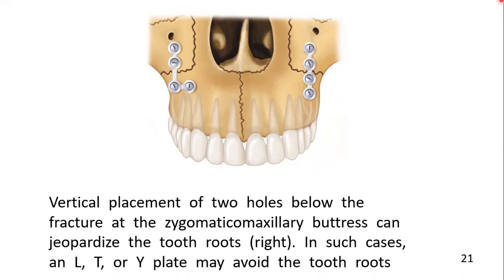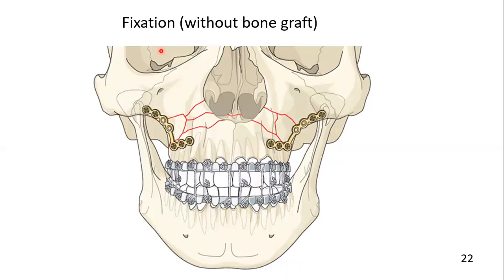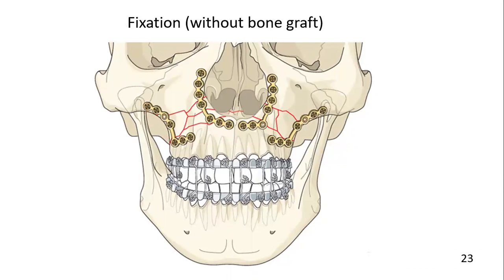Here are a few examples of how the buttress system is applied for surgical fixation. An L-shaped plate is placed across the zygomaticomaxillary buttress. Two plates have been bent to conform to the shape of the lateral buttress — that is the zygomaticomaxillary buttress — on both sides. Two plates are also applied to the medial buttress. On the medial side, the nasomaxillary buttress is restored, and on the lateral side, the zygomaticomaxillary buttress is restored.